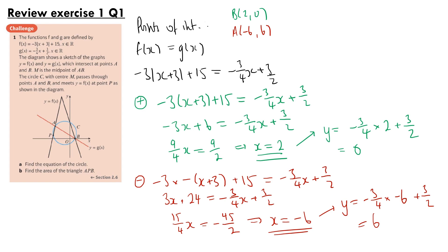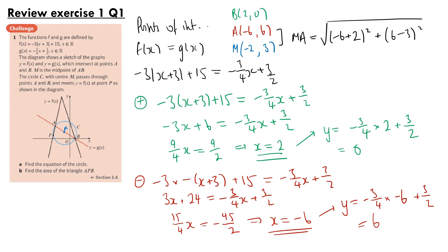Using these two points we can find the midpoint M of the circle. The midpoint is ((2 minus 6) over 2, (0 plus 6) over 2), so that's (minus 2, 3). Now, to find the equation of the circle we need the radius. Using points A and M: the radius equals the square root of (minus 6 minus minus 2) squared plus (6 minus 3) squared, which gives the square root of 16 plus 9, so the square root of 25, giving radius 5.